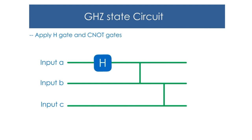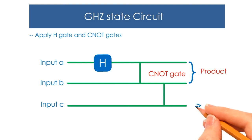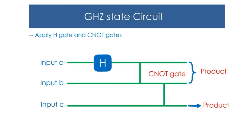Then calculate the tensor product of input A and input B, and apply the CNOT gate on the product. Then calculate the tensor product of the result with C. Finally, apply the CNOT gate on the product of B and C. Thank you.